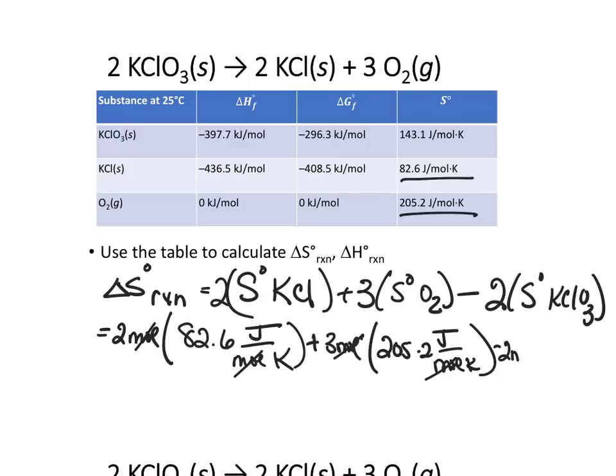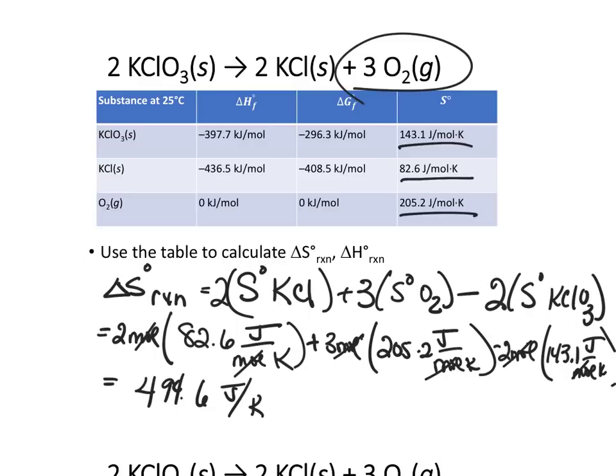and the moles cancel. Minus 2 moles times the S of KClO3, 143.1 joules per mole kelvin. The moles cancel. So that will leave us a delta S for the reaction equal to 494.6 joules per kelvin. So that's a pretty big entropy change. As entropy change goes, it is definitely positive as we produce 3 moles of gas in the reaction.